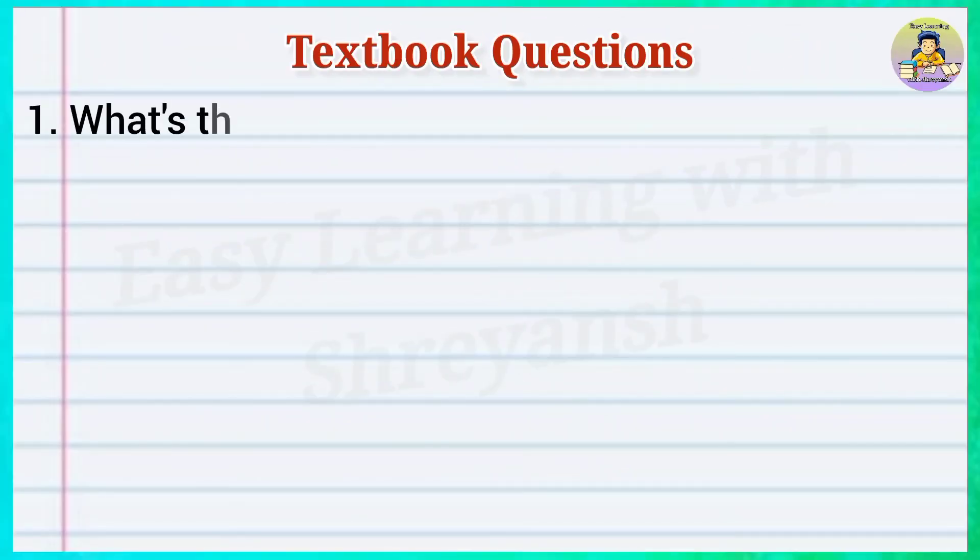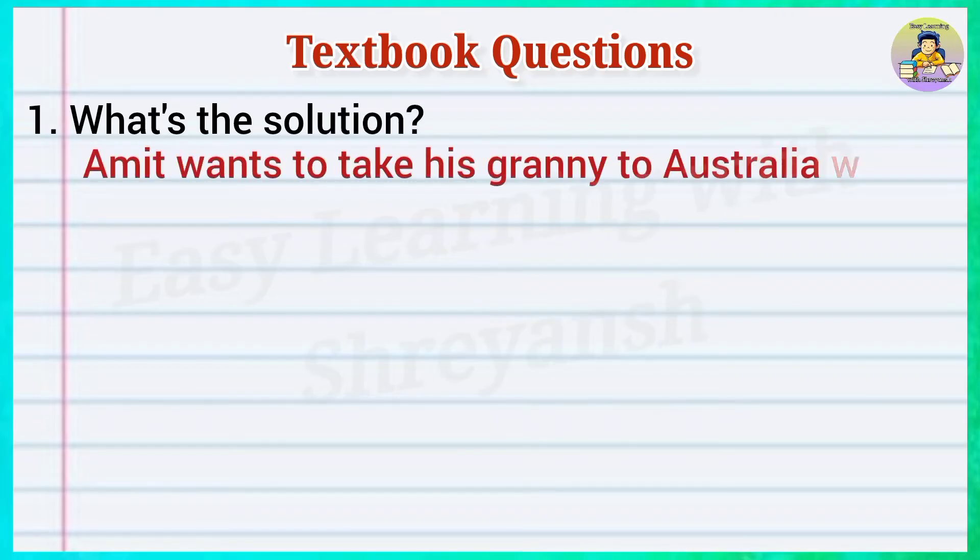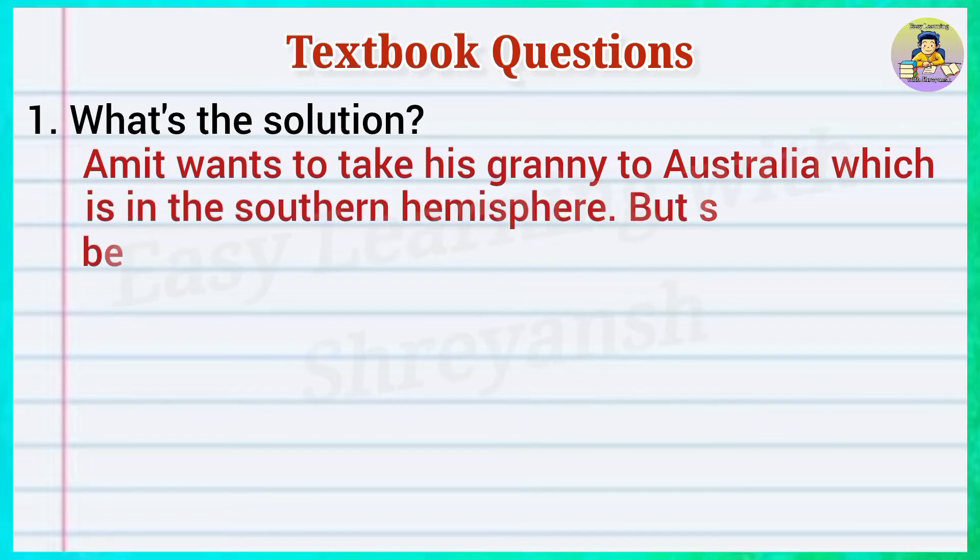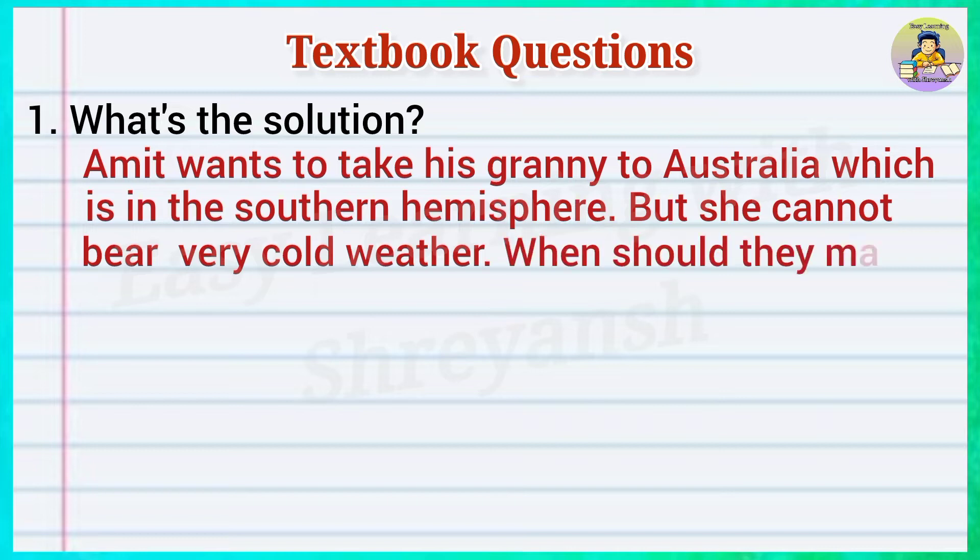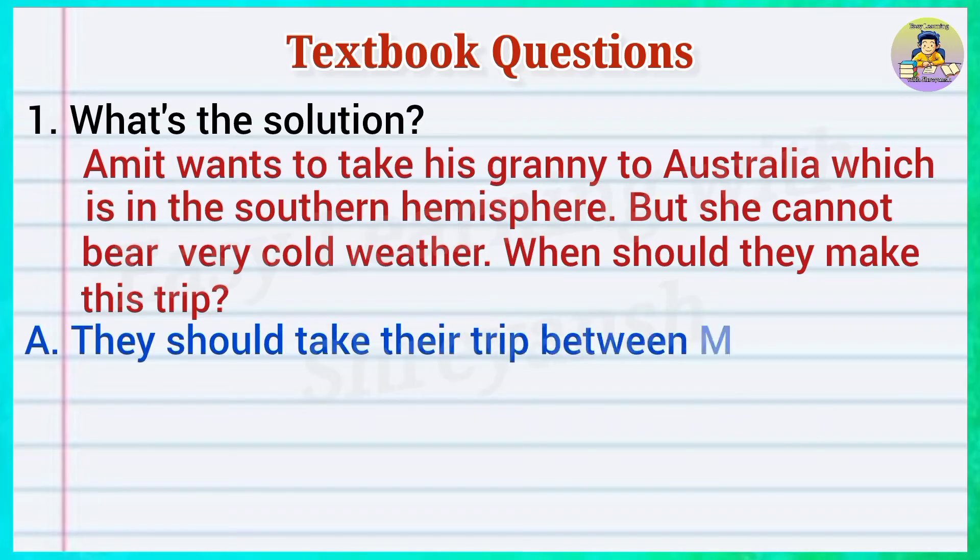Question 1: What's the solution? Amit wants to take his granny to Australia, which is in the Southern Hemisphere, but she cannot bear very cold weather. When should they make this trip? Answer: They should take their trip between March and September.